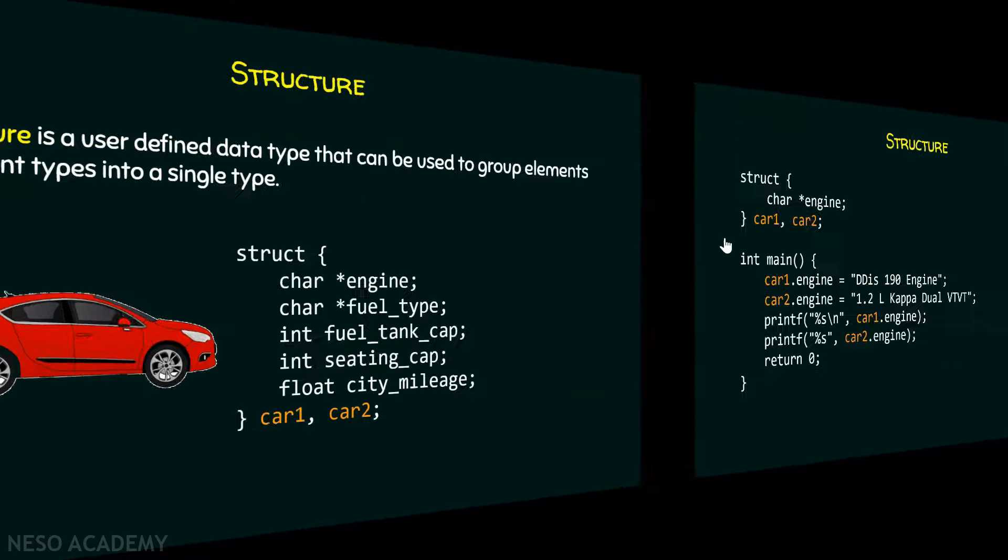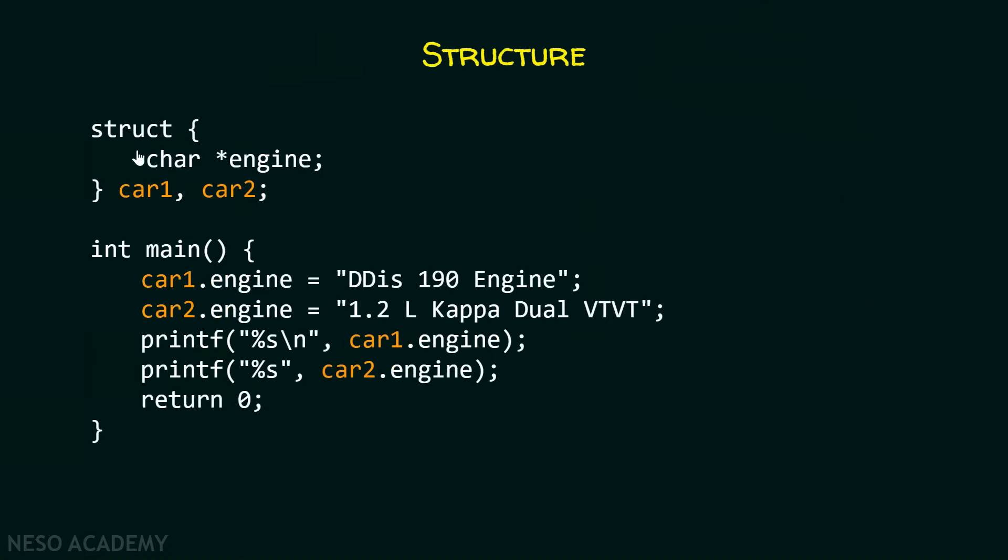Let me consider one example here. Suppose I have a structure like this which consists of just one specification that is engine. I am just taking this for the sake of simplicity. And here we have two variables car1 and car2 which is declared. Now, this structure is declared outside the main function which means that it is in the global scope.